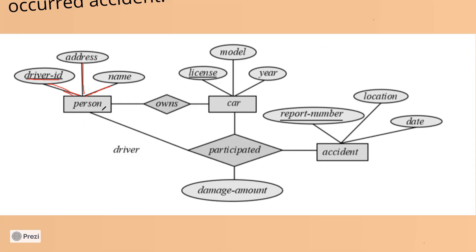This attribute — damage amount — is a mutual attribute of the person, the car, and the accident. So when we talk about mutual attributes, we associate them with that particular relationship. Since it doesn't belong solely to any one entity, we have created it as an attribute of the relationship itself.